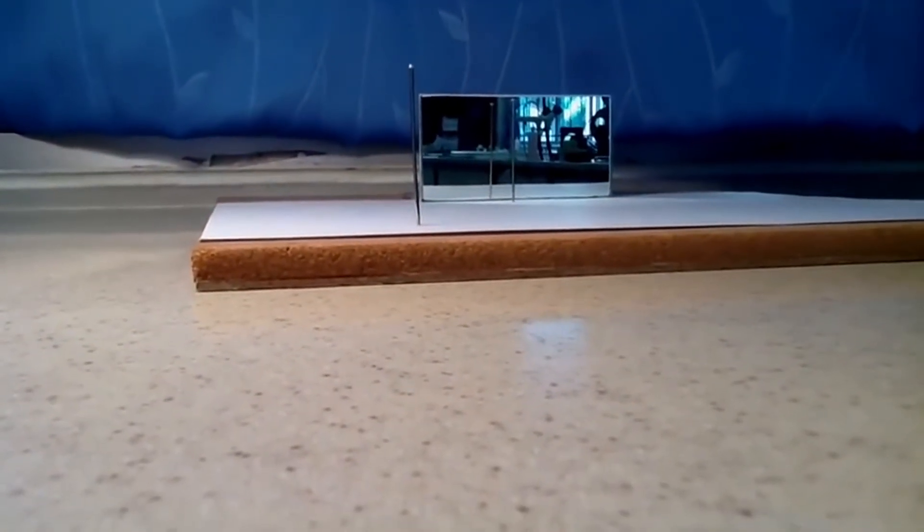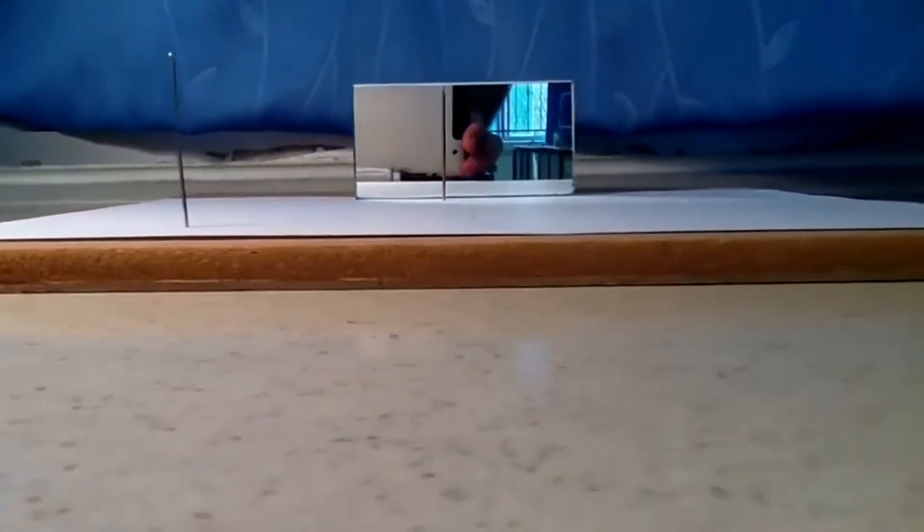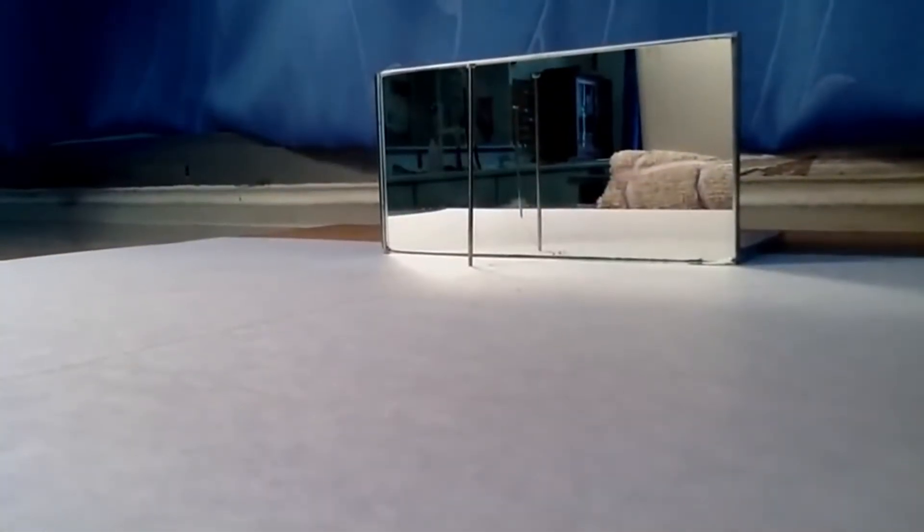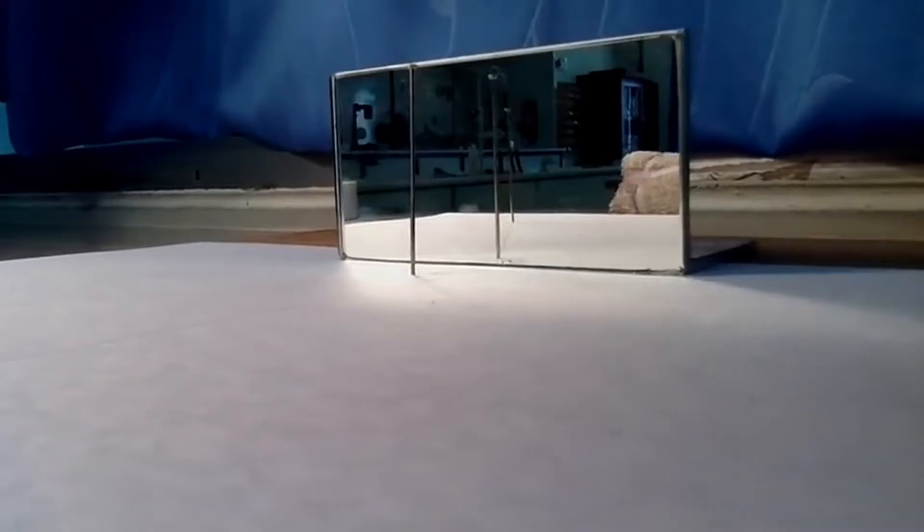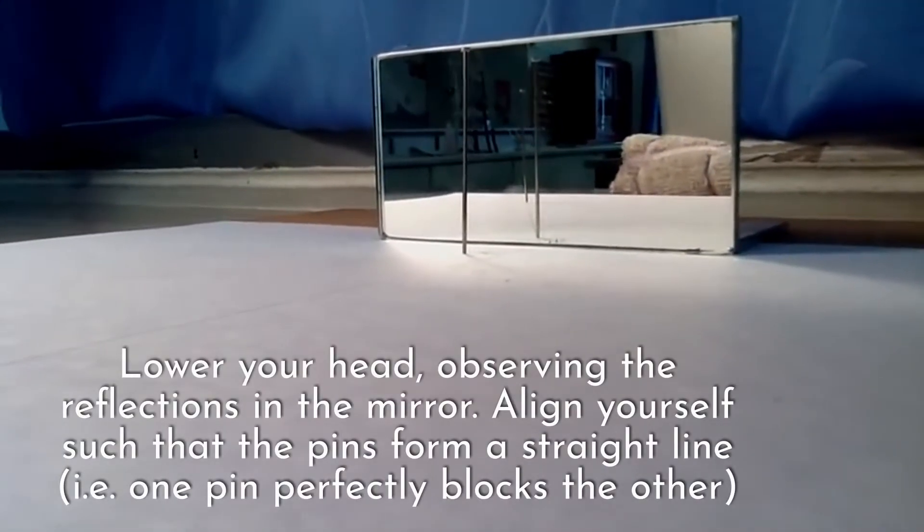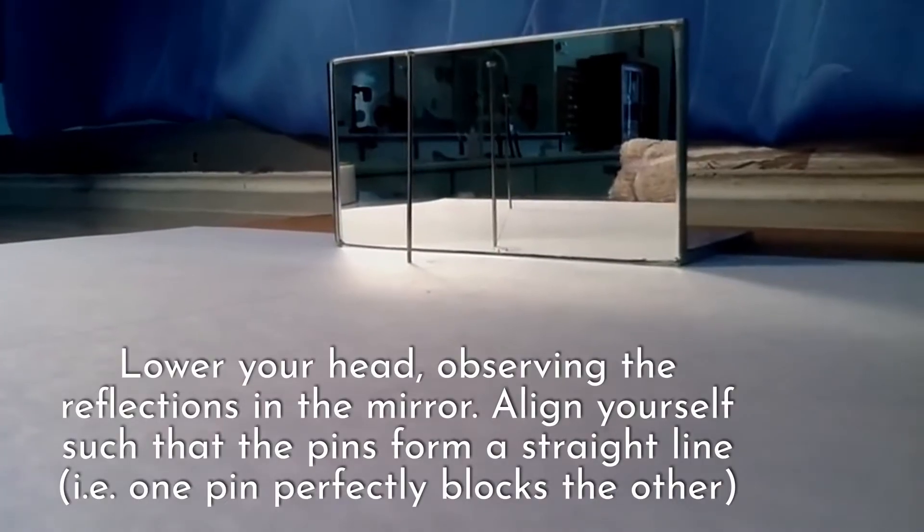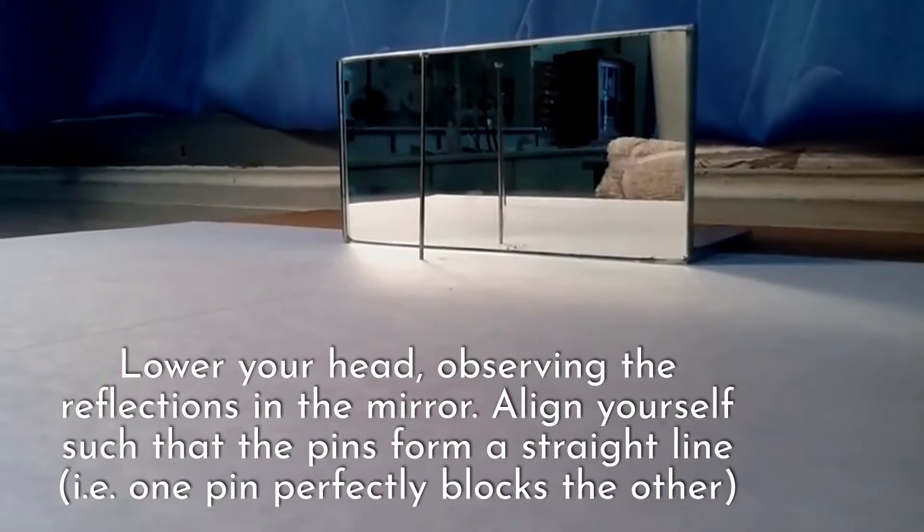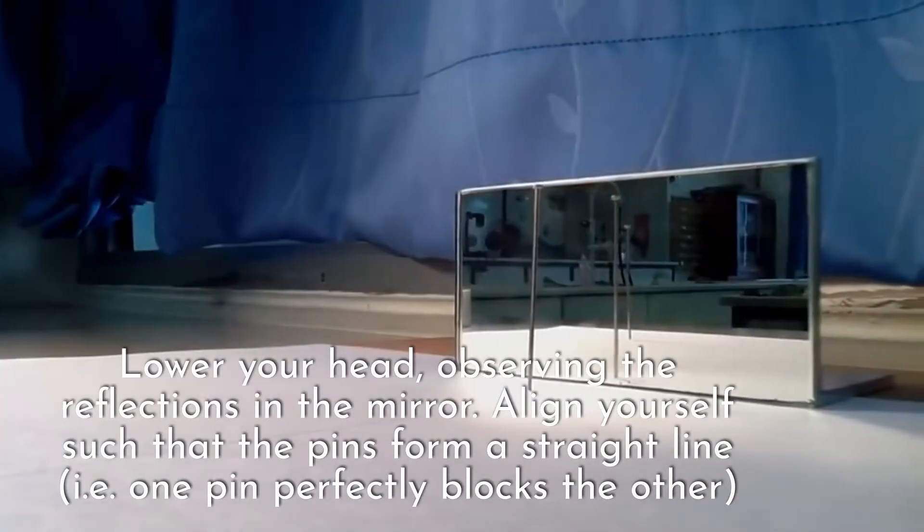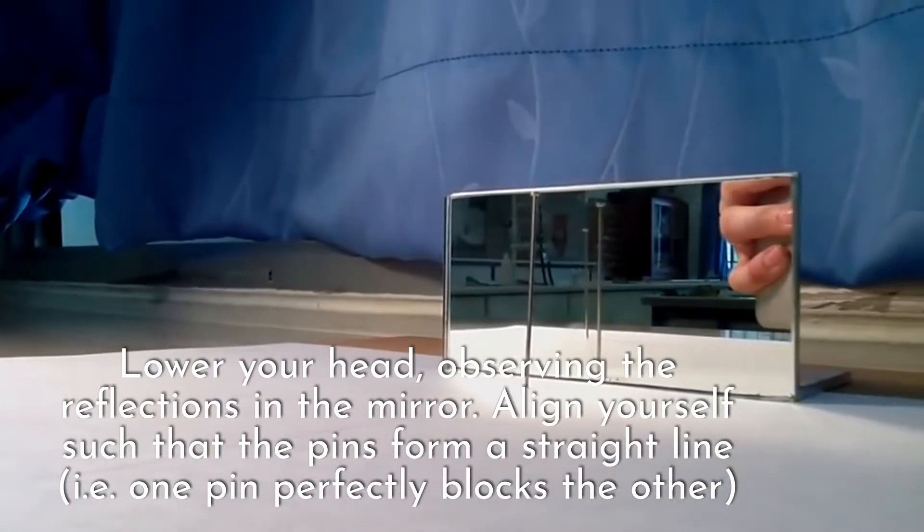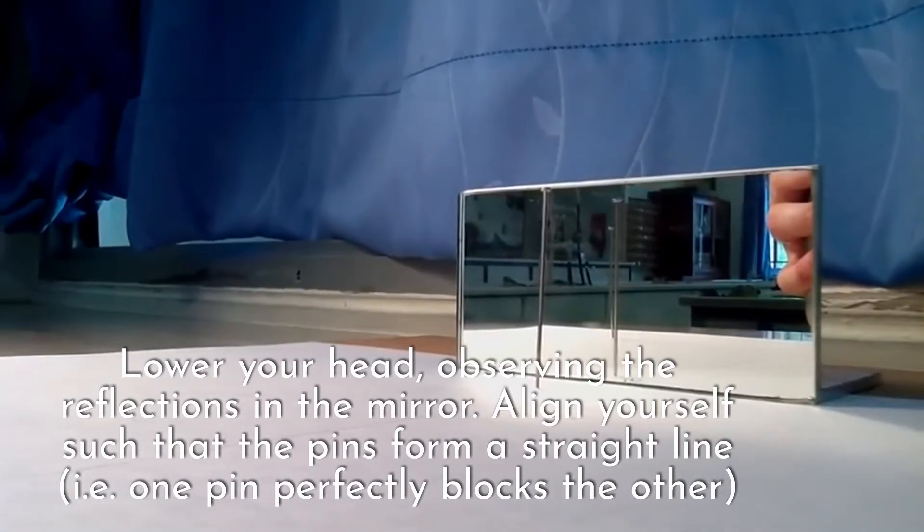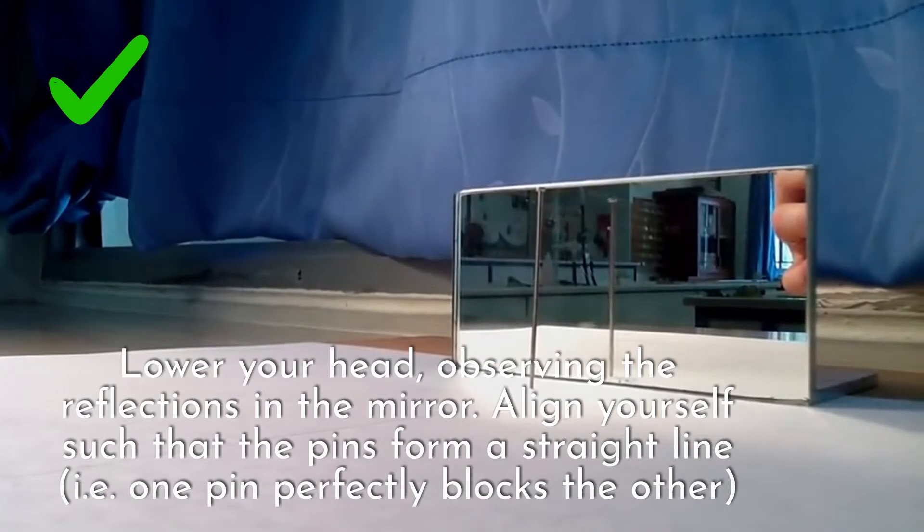Now you will need to bend your body so that your eye is at the same level as the pins. If you move your head you will see the reflections quite clearly in the mirror. If you move your head from side to side you will see the two reflections. And if you get your eye in exactly the right position you will be able to hide one pin behind the other, so that you can only see one reflected pin.